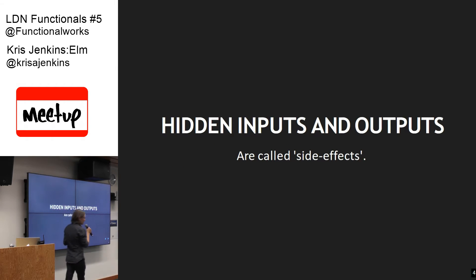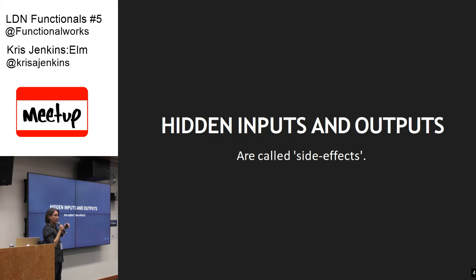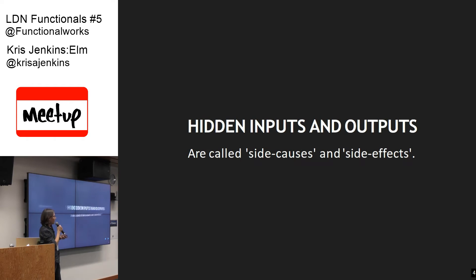There's a name for these hidden inputs and outputs, and it's called side effects. It's just an easy way to think about side effects — what is happening here that isn't in the function signature? I think we need two terms: side effects for the hidden outputs, like the changing of state of something, and side causes as a term for the hidden inputs — the external things that your function depends on before it can run.